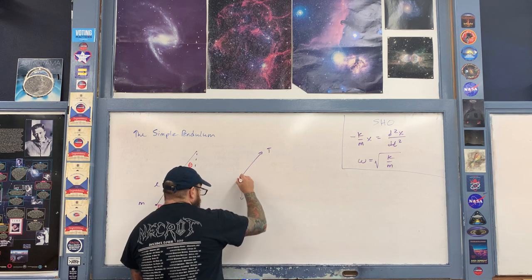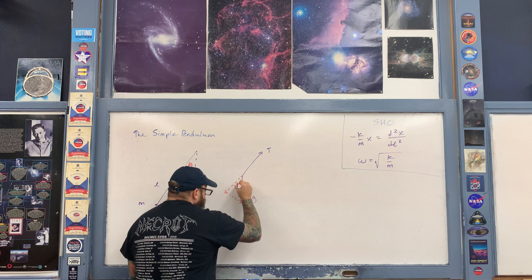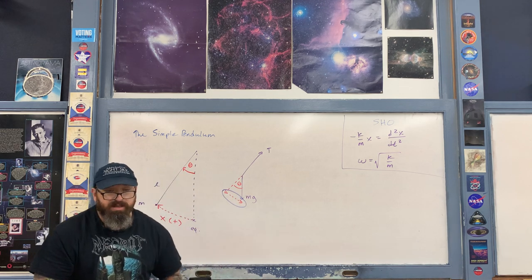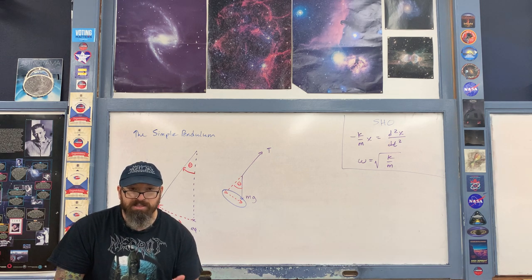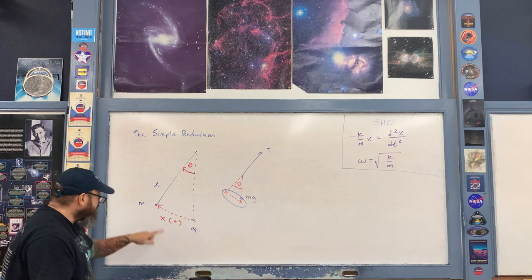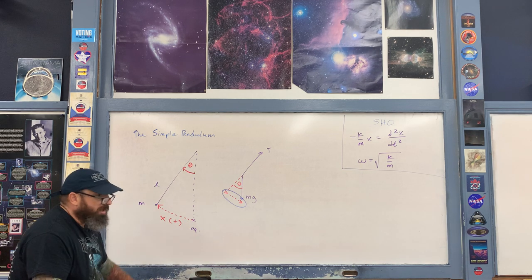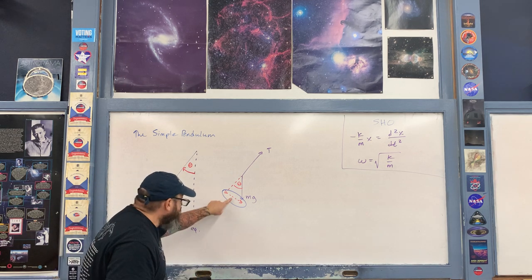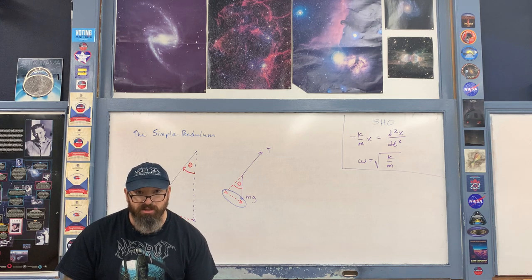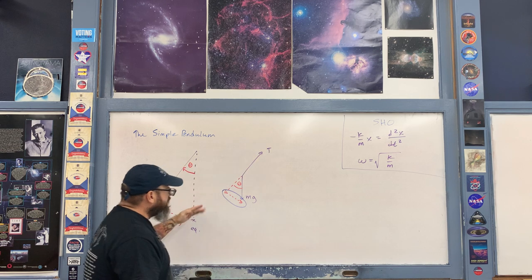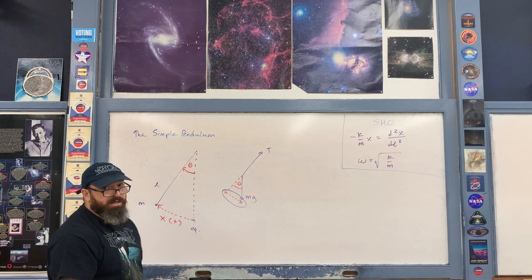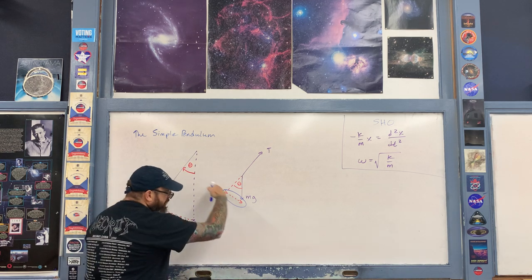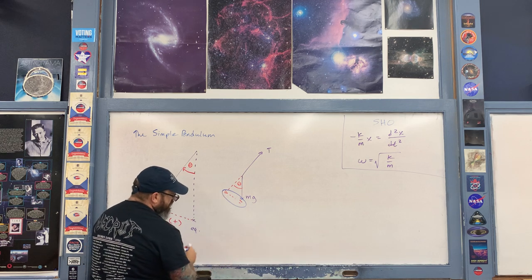We break up the mg vector into components. From the geometry, the relevant angle is theta, giving components along and perpendicular to the arc. Notice that mg sine theta acts like the spring force in the sense that it's a restoring force — it tries to bring the pendulum back to the equilibrium position. When we examine F equals MA, we only look in the direction tangential to the circular arc. It is this component, mg sine theta, that gives us a tangential acceleration. We're not concerned with the radial direction, which has a centripetal acceleration perpendicular to the motion.